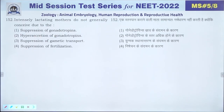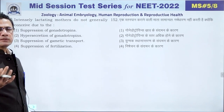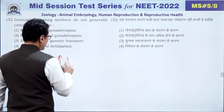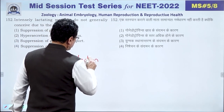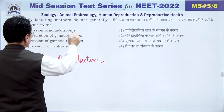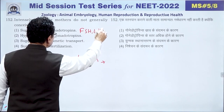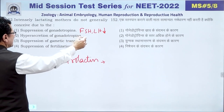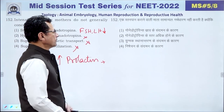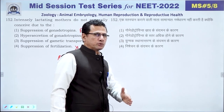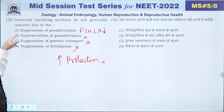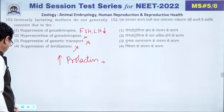Question 152: Intensely lactating mothers generally do not conceive because high prolactin levels suppress gonadotropins (FSH and LH). This reduces ovulation chances to a minimum. Suppression of gametic transport or fertilization has no role here. The answer is 1 — suppression of gonadotropin release.